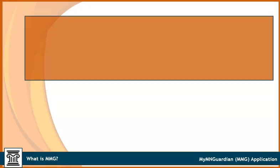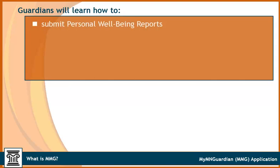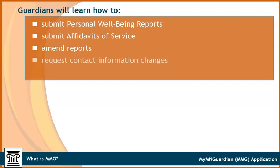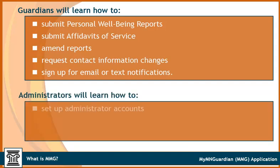In this module, guardians will learn how to submit their personal well-being reports and Affidavits of Service, amend reports, request contact information changes, and sign up for email or text notifications. Agency administrators will learn how to set up administrator accounts, give staff access, and assign and reassign cases to staff.